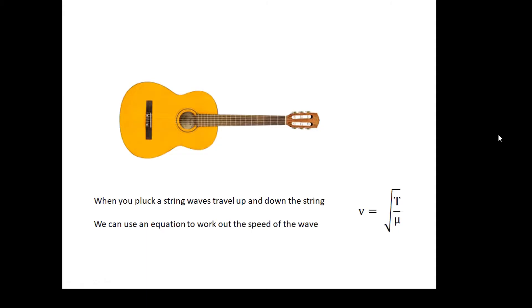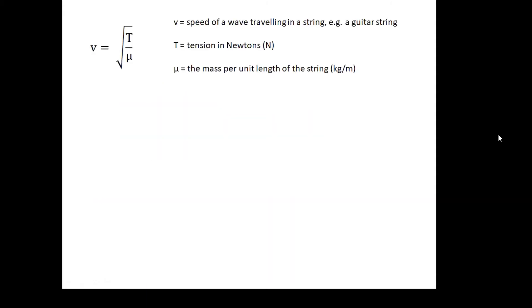v = √(T/μ). T is the tension in the string, it's how tight the string is. T is the tension in Newtons. v is the speed of the wave. μ is the mass per unit length of the string in kilograms per meter.